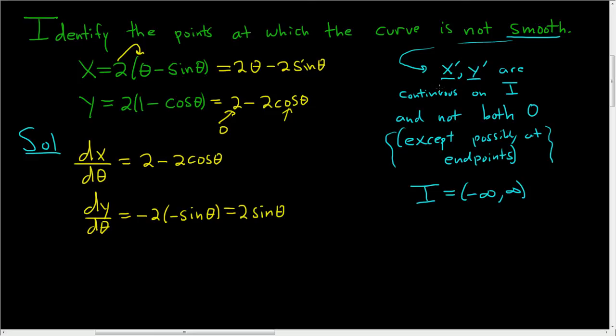Again, what does it mean to be smooth? It means the derivatives are continuous and not both 0. In this case, the derivatives are continuous. To find where it's not smooth, we're going to set both of them equal to 0.